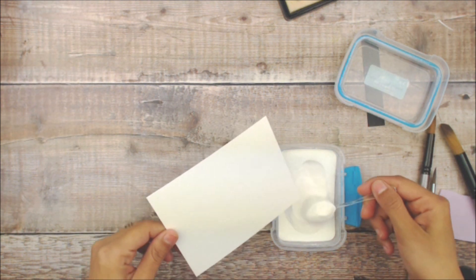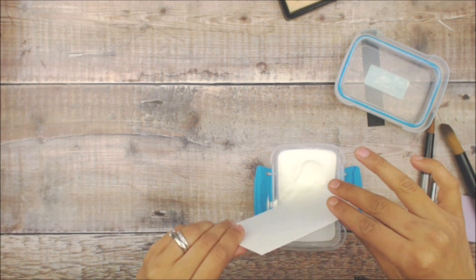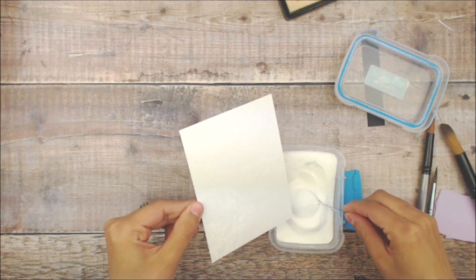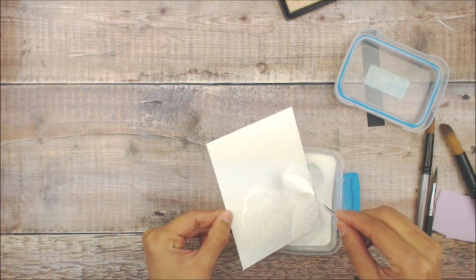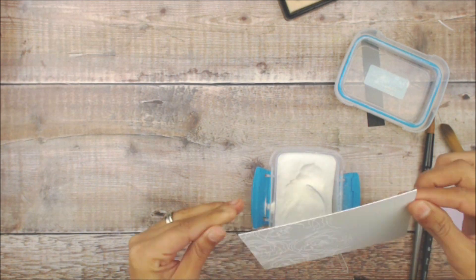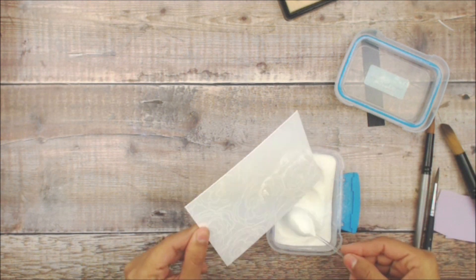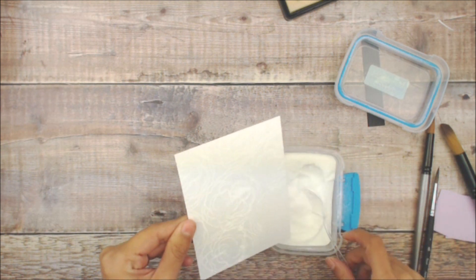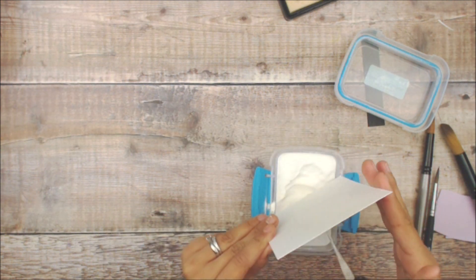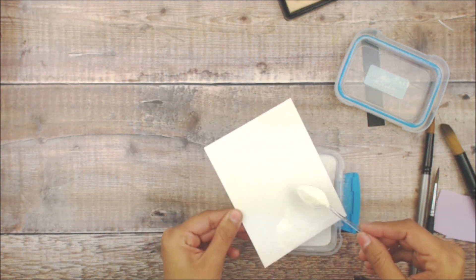Using white embossing powder, I'm going to get some onto that clear stamp. Trying to be careful not to get it all over the place, I'm going to speed up the video as I go ahead and start heat embossing with my heat tool.